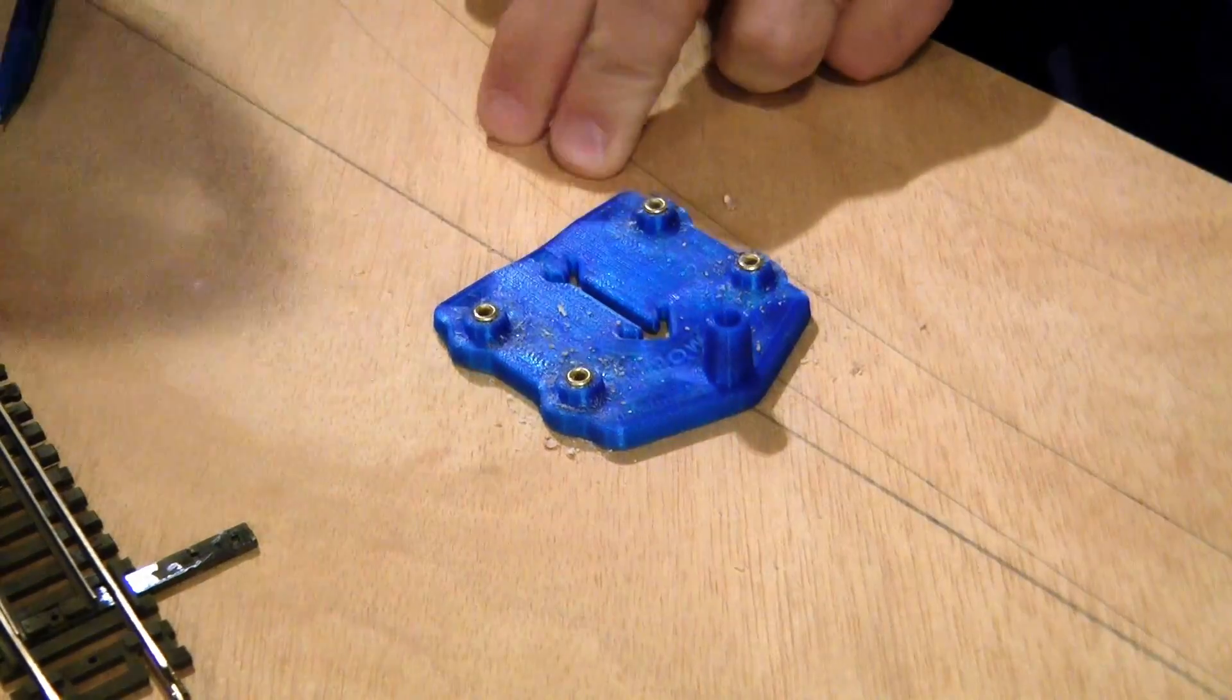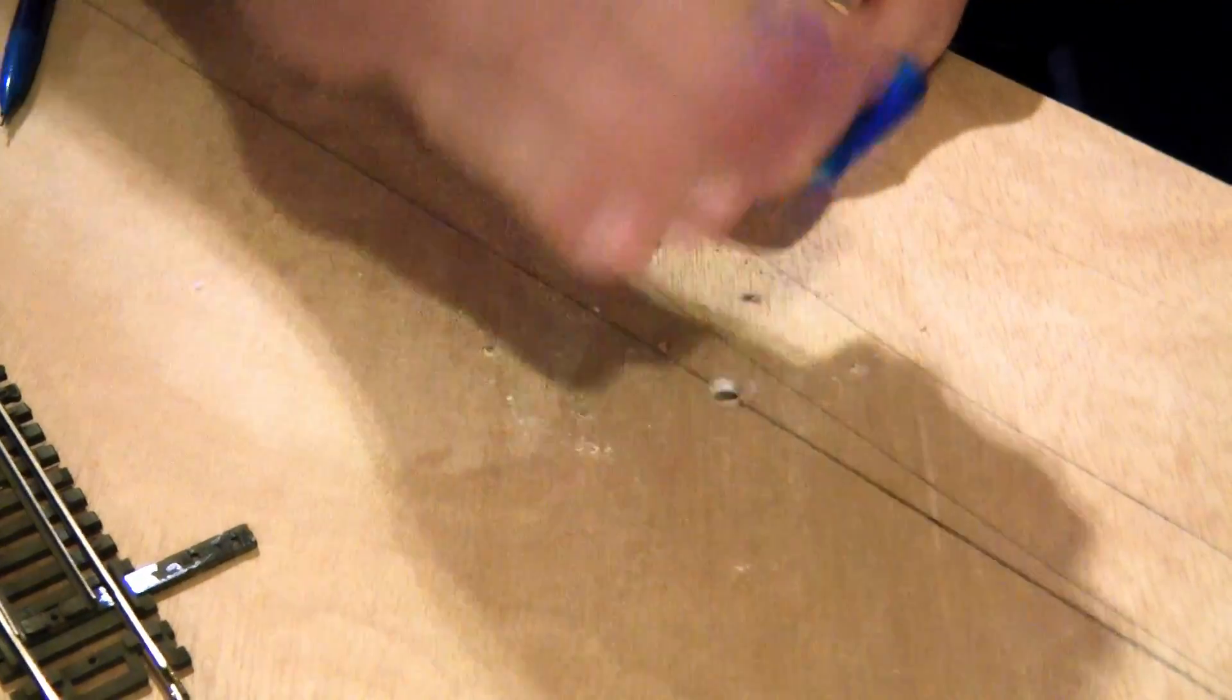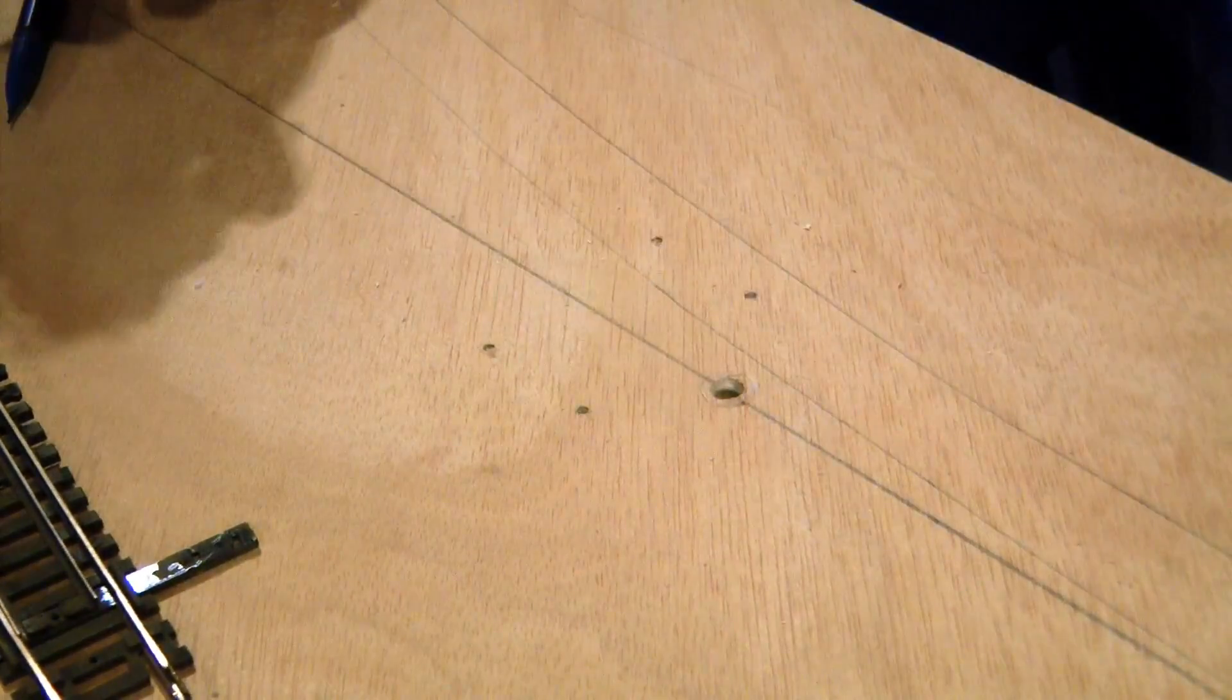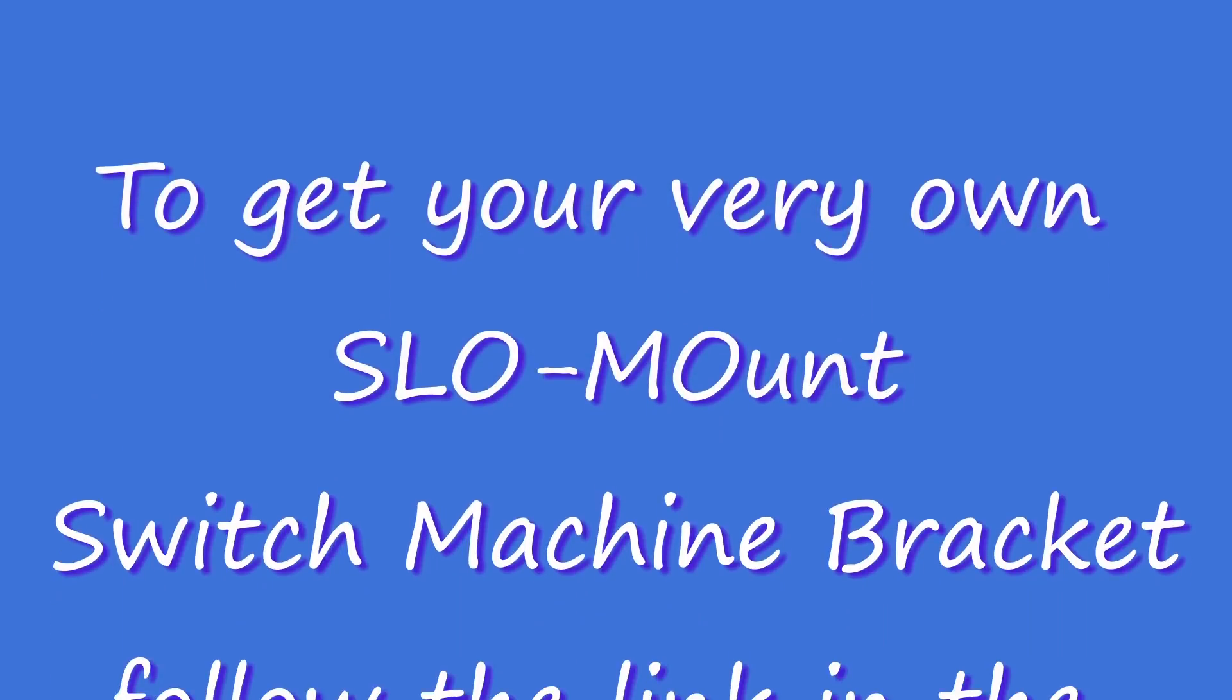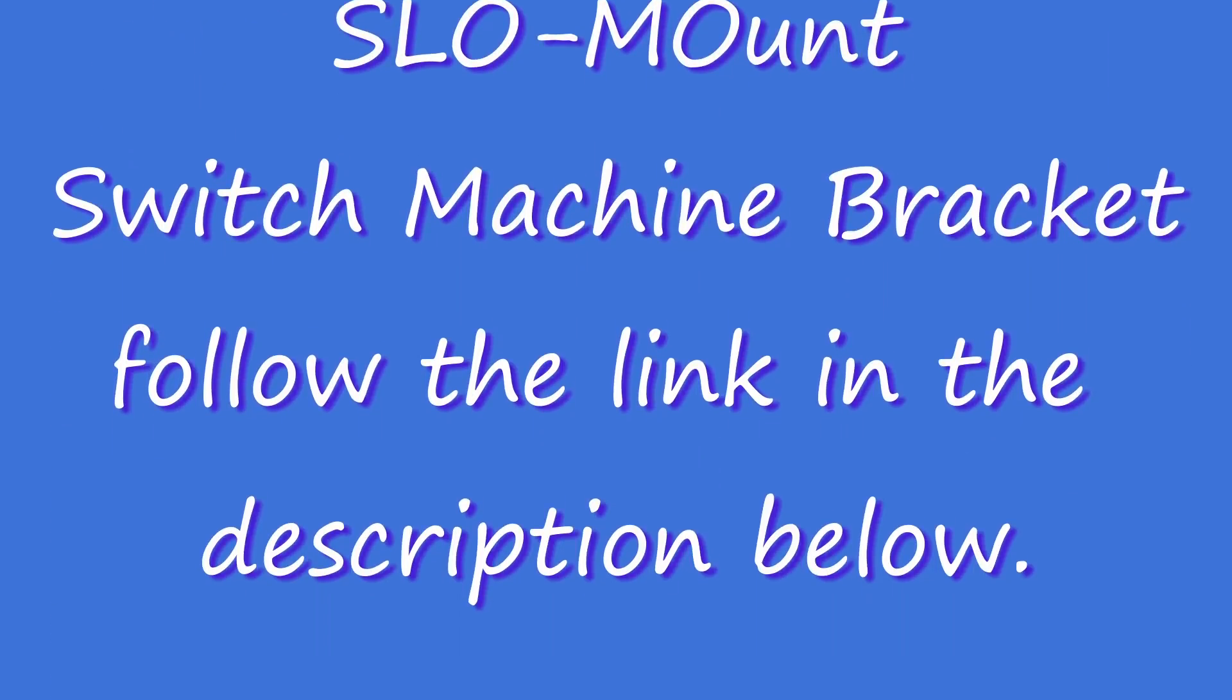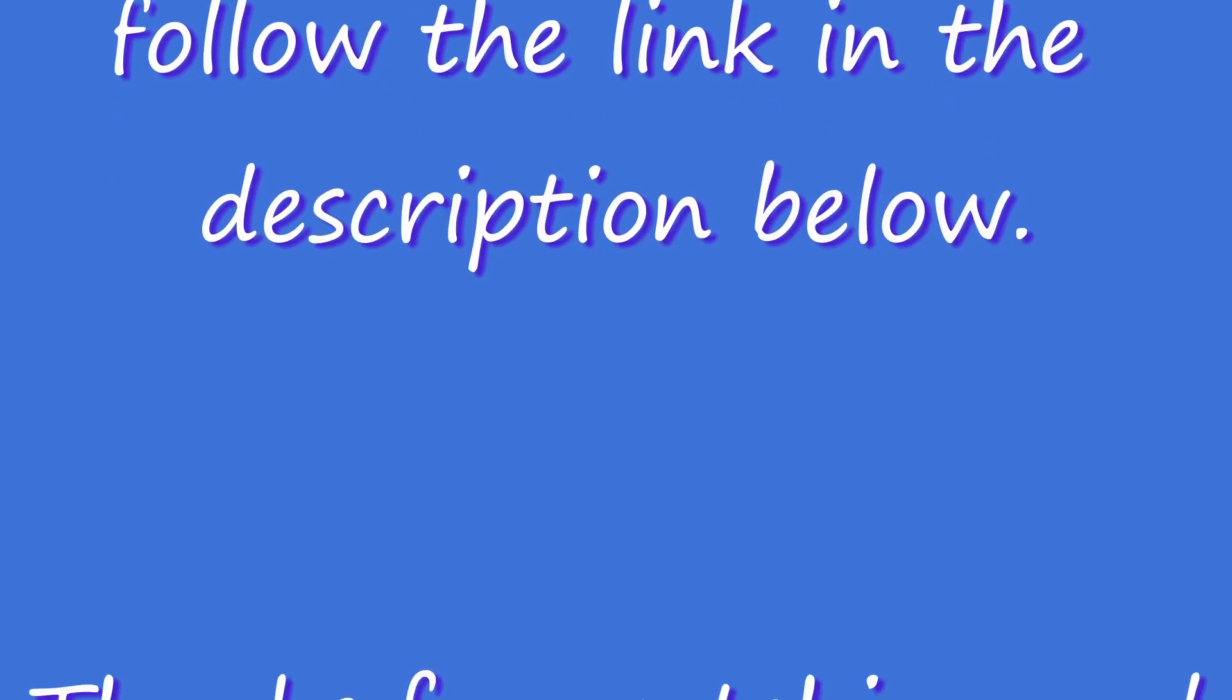Once your screw holes are drilled, you will then just carefully remove the bracket from the layout, clean up your workspace, and you're good to mount your switch machine. We hope you found this video useful, and if you want to get your own switch machine bracket, check out the link to our eBay site in the description below.